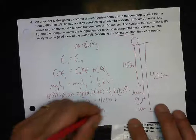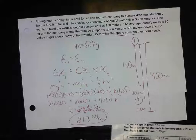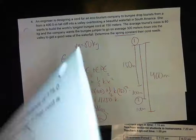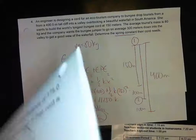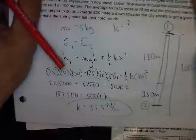So that's the answer for the South America problem. For the Dubai version, the spring constant comes out to 37.5 Newtons per meter. That's number four. All right — that only took 18 minutes and 40 seconds. Not bad.